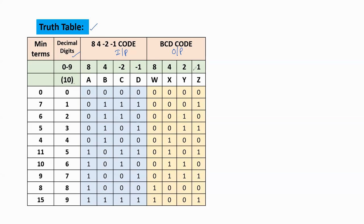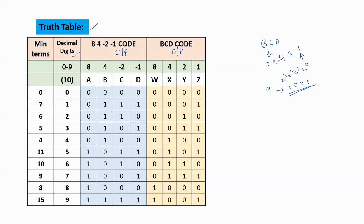BCD is called the 8-4-2-1 code because BCD represents decimal digits 0 to 9 using binary data. The largest digit is 9, and to write 9 in binary requires 4 bits. Based on binary weights 2^0, 2^1, 2^2, 2^3, it requires 4 bits. The equivalent weights are: 2^0 = 1, 2^1 = 2, 2^2 = 4, 2^3 = 8. So BCD is also called the 8-4-2-1 code and is a weighted code.